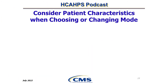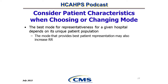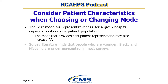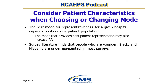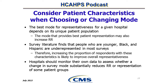The best mode for representativeness for a given hospital depends on its unique patient population. The mode that provides the best patient representation may also increase response rate. The survey literature finds that people who are younger, Black, and Hispanic are underrepresented in most surveys. Therefore, increasing the proportion of respondents with these characteristics is likely to improve overall representativeness. Hospitals should monitor their own data to assess whether a change in survey mode substantially reduces response rate or representation of some patient groups.